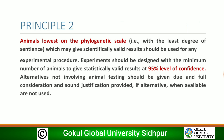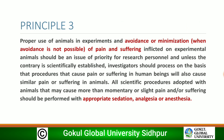Principle 2: Animals lowest on the phylogenetic scale — that is, with the least degree of sentience — which may give scientifically valid results at a 95% level of confidence should be used. Alternatives not involving animal testing should be given due and full consideration, and sound justification must be provided if alternatives, when available, are not used.